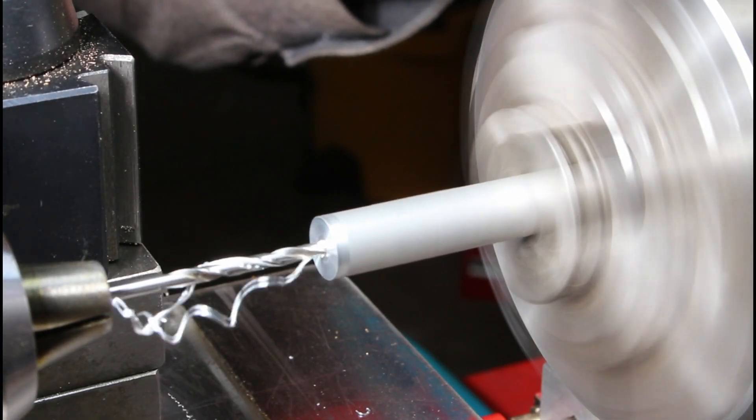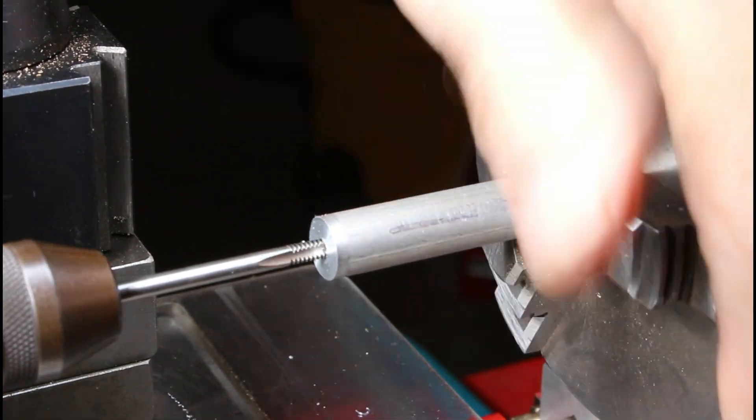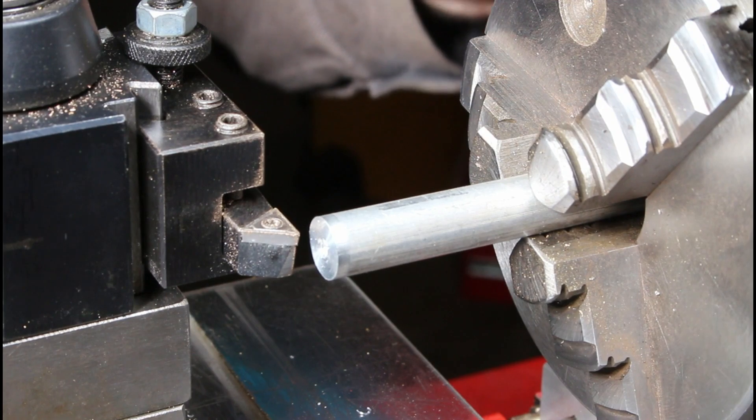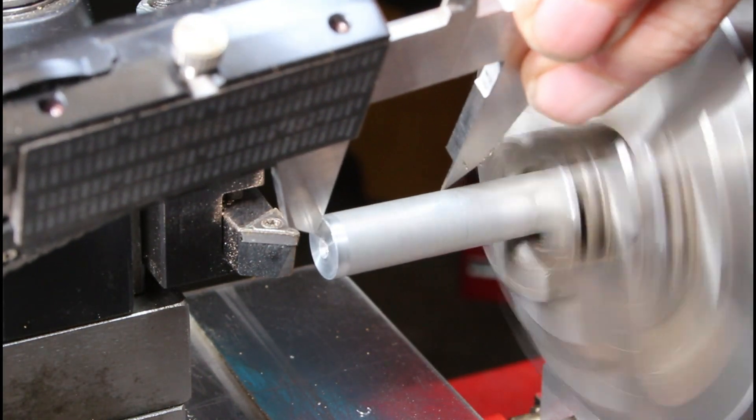And then, of course, center drilling, drilling, and tapping to get one end all set up for a 6-32 bolt, which is what is called out for in the plans to secure the section that is mounting on top of this post.